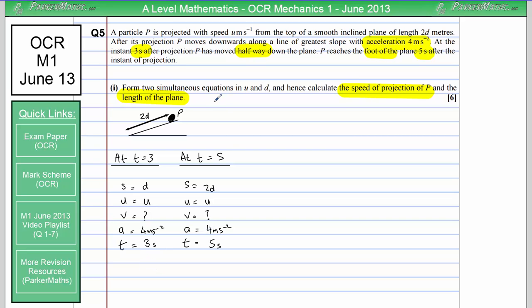To form these simultaneous equations, I'm going to use S equals ut plus half a t squared. I've chosen that one because it involves u, t, a, and s. I'm not really interested in the velocity. So substituting these values into this formula, S is going to become d, ut, well we don't know u but t is 3 so that becomes 3u plus half multiplied by a which is 4 multiplied by t squared which is 3 squared. Let's simplify this down a bit. We get 3u. 3 squared is 9, multiply that by 4 is 36, half it we get 18. I'm going to call that equation 1.